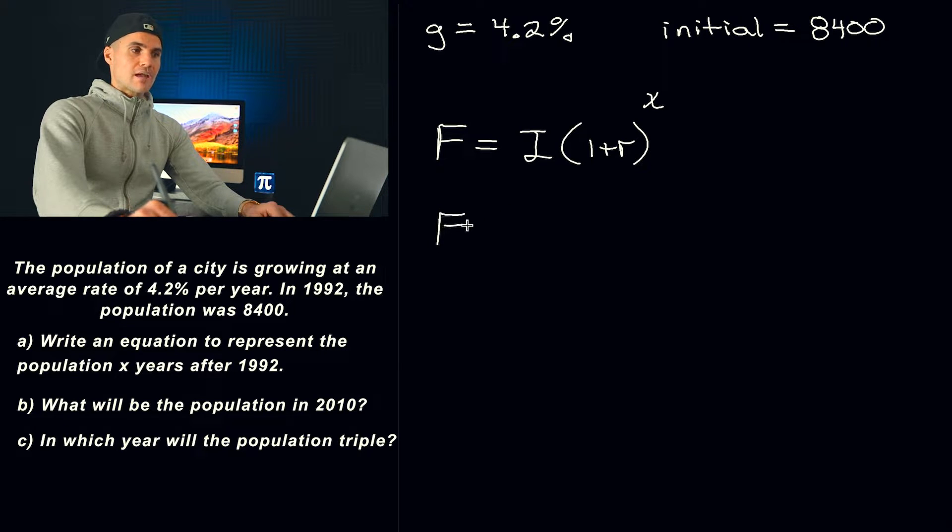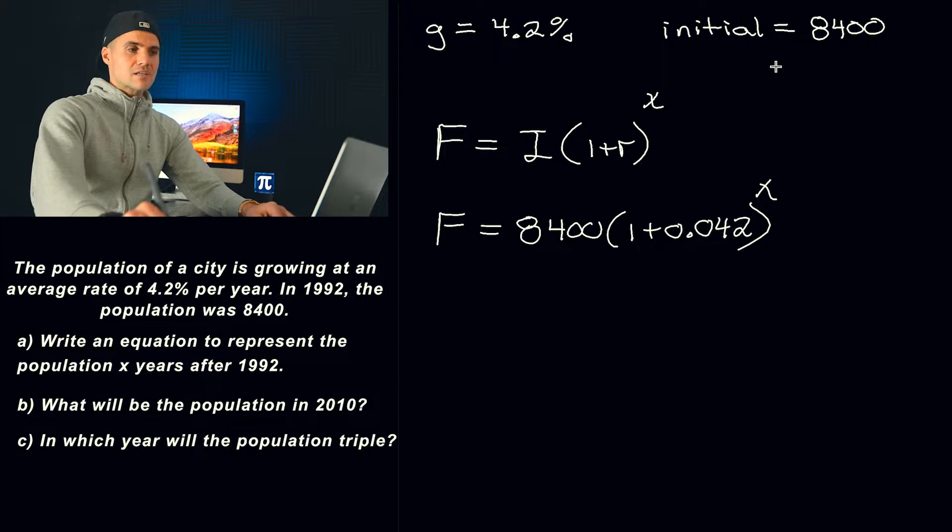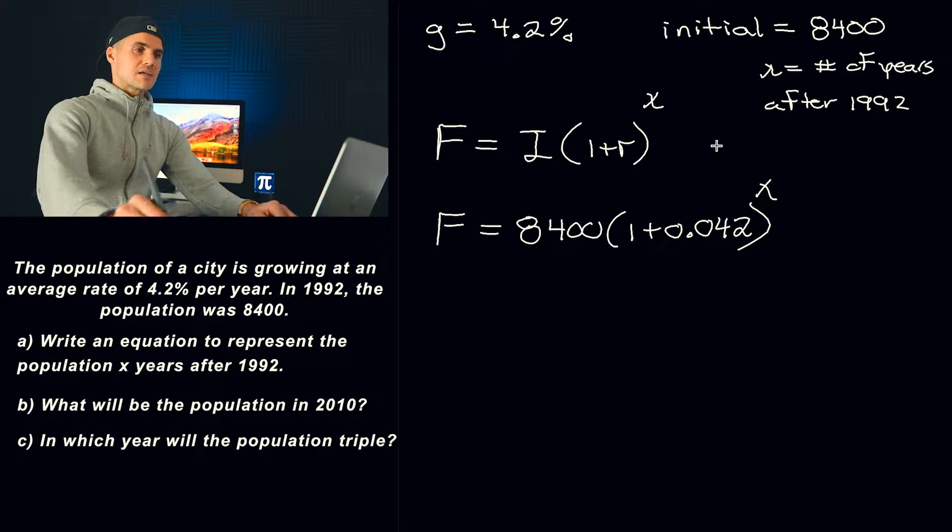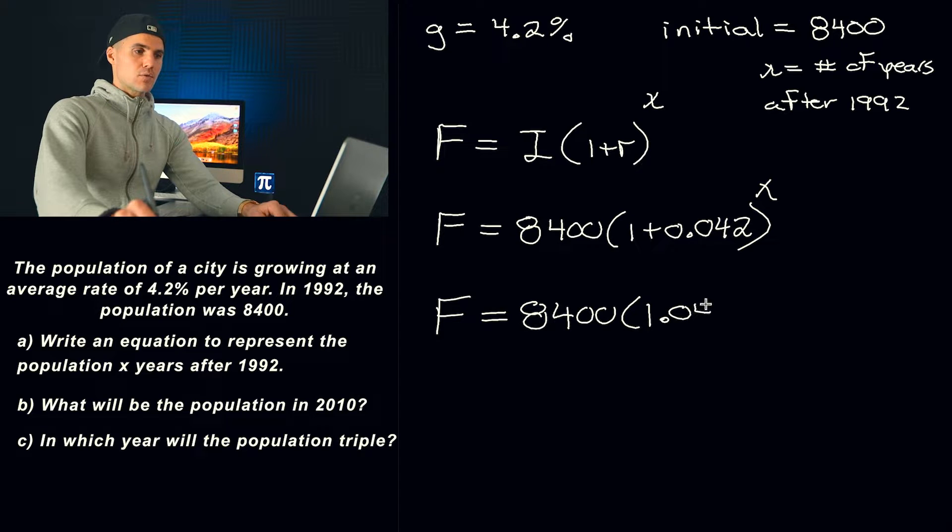So basically for part A, we got to create an equation, plugging everything in. We got our initial amount, 8,400. We got to convert the 4.2% into a decimal, 0.042. And then that's going to be to the power of x. And then x is basically the number of years after 1992. Because 1992, that's basically when the population, that initial population that we're looking at was 8,400. So x is going to represent the number of years after 1992. Making this look a little bit nicer, basically the equation we're going to be using throughout this question is going to be that right there.